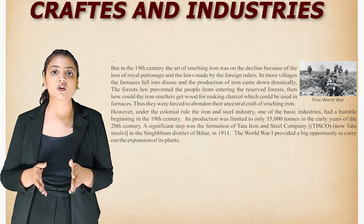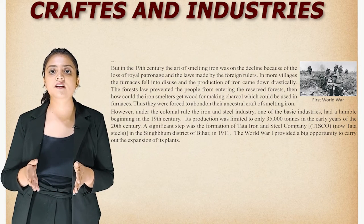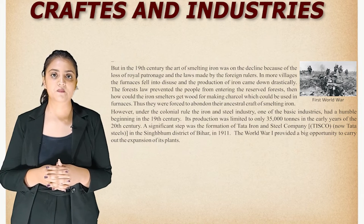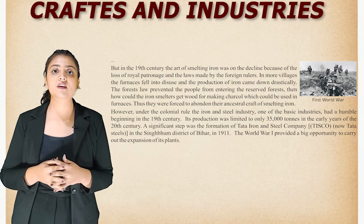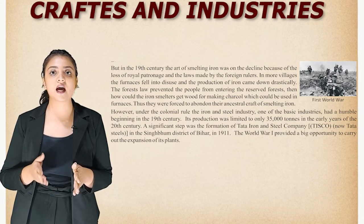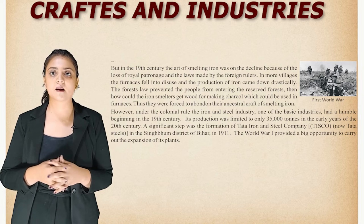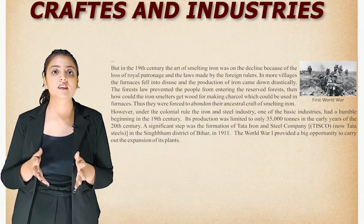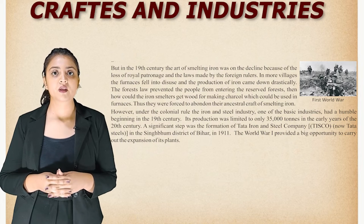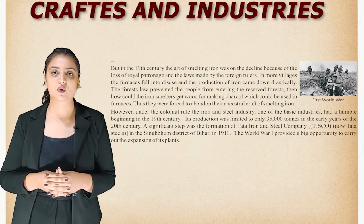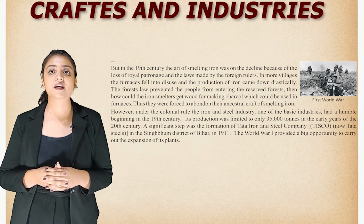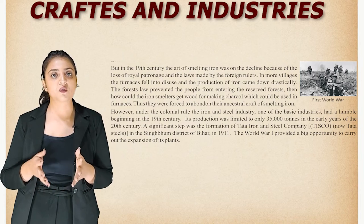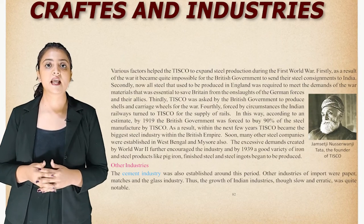Under colonial rule, the iron and steel industry had a humble beginning in the 19th century, with production limited to only 35,000 tons. In the early years of the 20th century, a significant step was the formation of the Tata Iron and Steel Company (TISCO), now Tata Steel, in the Singhbhum district of Bihar in 1911. World War One provided a big opportunity to carry out the expansion of its plants.